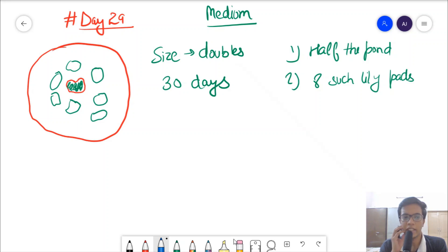The day 29 question was: there is a pond and there is a lily pad in it. First part - there is one lily pad and the lily pad doubles every day. Size doubles every day. First information was size every day doubles. Second information is it takes 30 days to cover the entire pond.